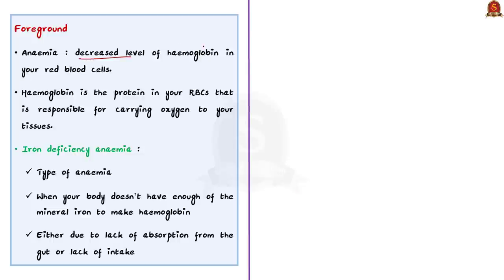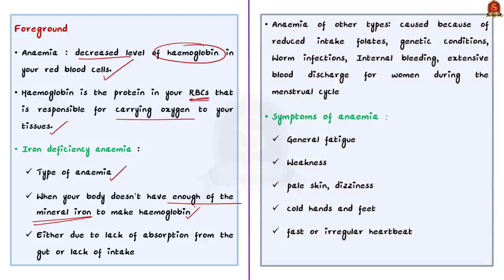Let us begin with knowing what is anemia and iron deficiency anemia. Anemia occurs when you have decreased level of hemoglobin in your red blood cells. Hemoglobin is the protein in your red blood cells that is responsible for carrying oxygen to your tissues. Iron deficiency anemia is a type of anemia that occurs when your body does not have enough of the mineral iron. Your body needs iron to make hemoglobin. No iron means reduced production of hemoglobin which in turn results in anemia. In addition to iron deficiency anemia, there are also other types of anemia. For example, there is anemia because of reduced intake of folates, anemia due to genetic conditions. Worm infection also causes anemia. Worm infections reduce the abdominal absorption of iron from the food we take. This in turn causes anemia. Internal bleeding and extensive blood discharge for women during the menstrual cycle could also be a reason for anemia.